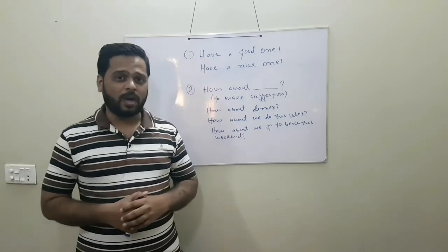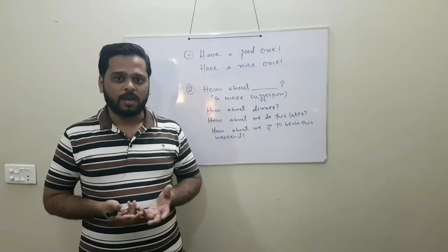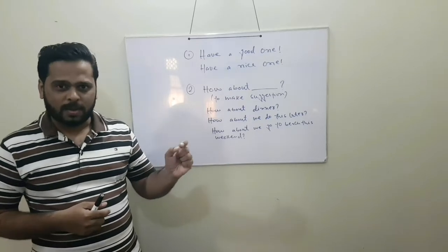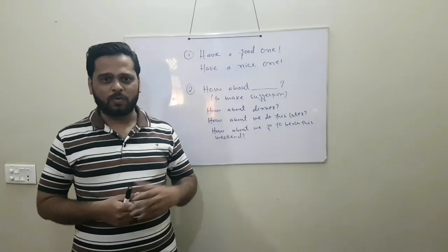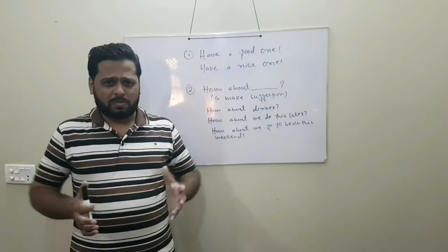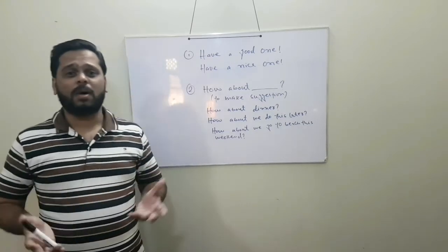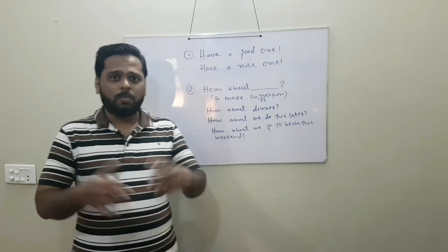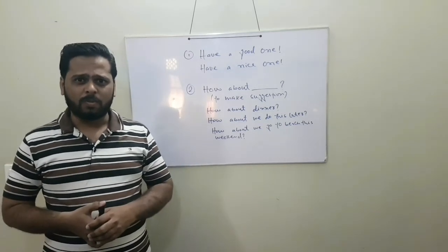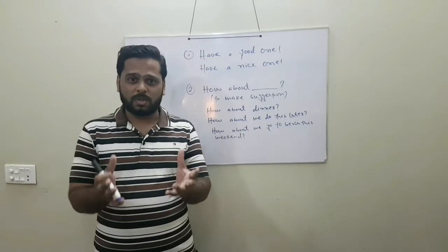Next, our expression is 'how about.' When do we use how about? When we make suggestions to friends and family. If you have friends and family and you have a suggestion, we use how about. Like, how about dinner? How about we do this later? How about we go to the beach this weekend? How about to make suggestions.